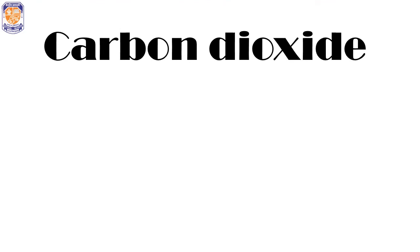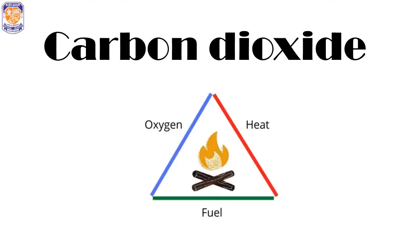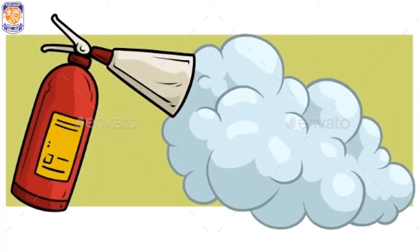Fire requires oxygen to continue burning, so to control or extinguish fires we need to cut off the supply of oxygen to the burning substance. This is the principle used in fire extinguishers. Carbon dioxide is commonly used in fire extinguishers because it does not support burning — it cuts off the oxygen supply by forming a layer between the fuel and oxygen, stopping the fire.